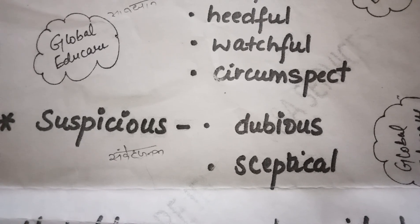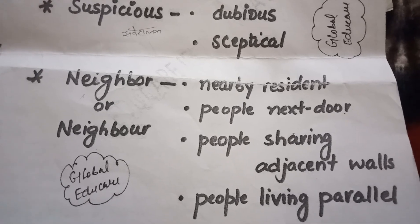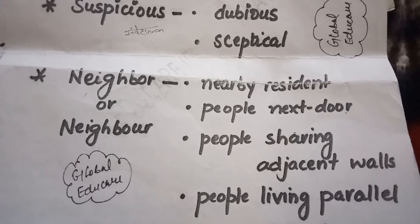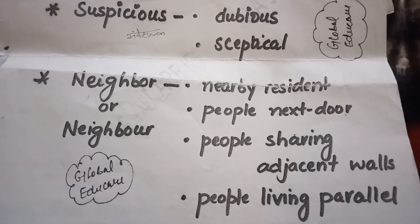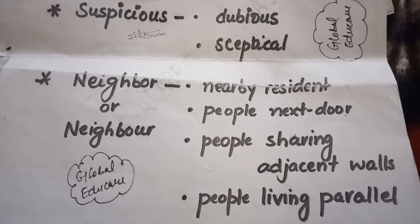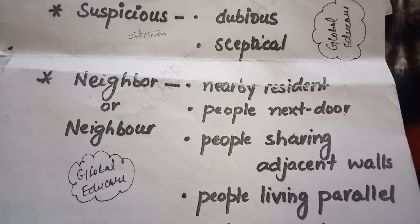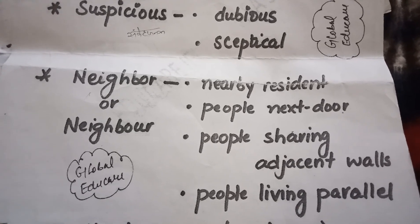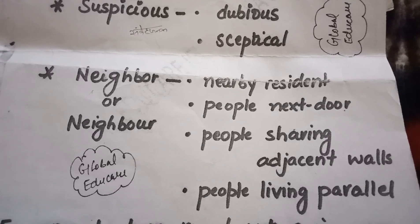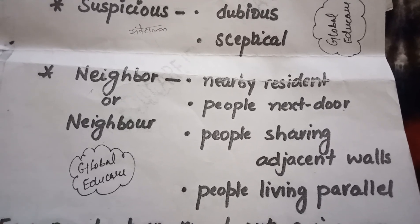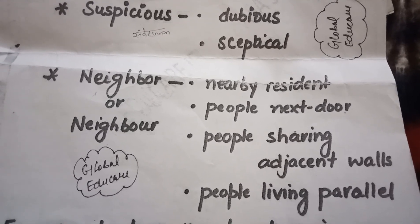Also 'dubious' and 'skeptical.' Now for the word 'neighbor' — in American English it is spelled N-E-I-G-H-B-O-R, and in British English it is N-E-I-G-H-B-O-U-R. Synonyms for neighbor include: nearby resident, next door people, people sharing adjacent walls — meaning joined walls — or people living in parallel.